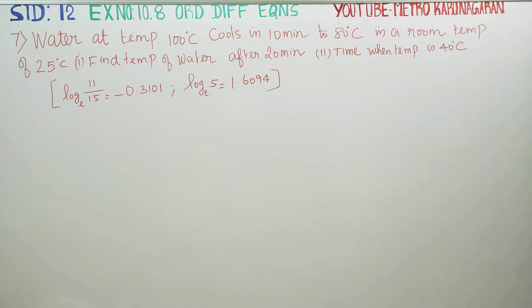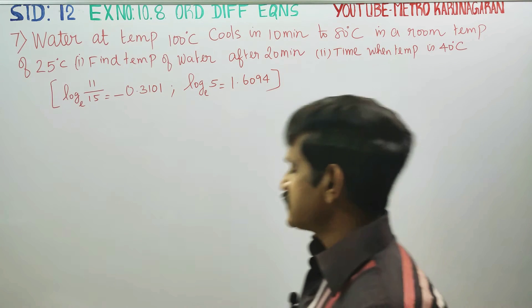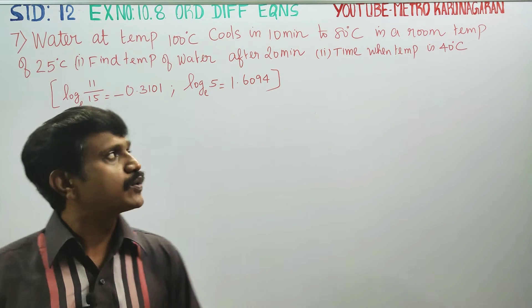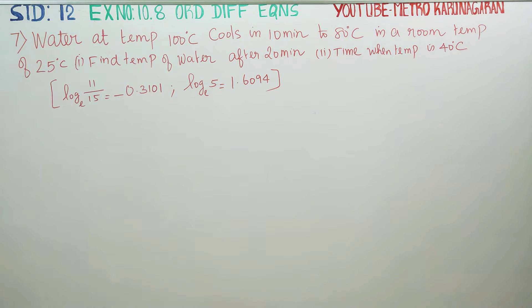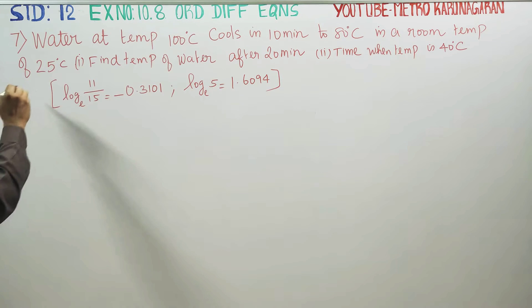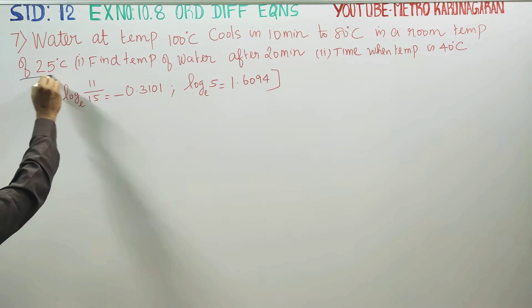Dear 12th standard students, in exercise 10.8, sum number 7: water at a temperature of 100 degree Celsius cools to 80 degree Celsius in a room temperature of 25 degree Celsius.